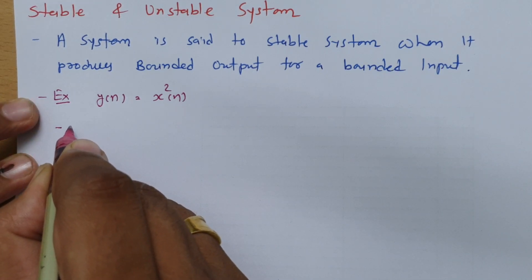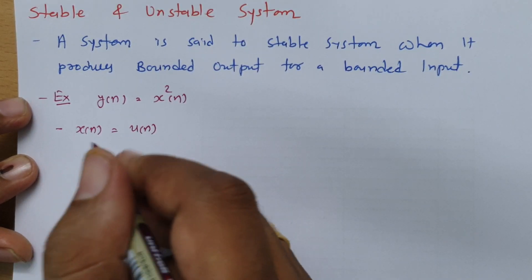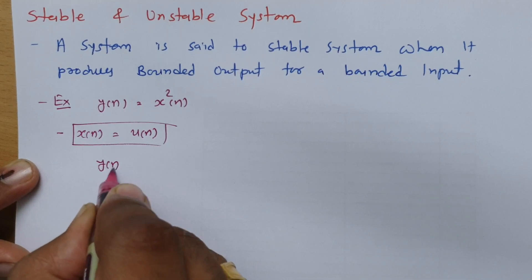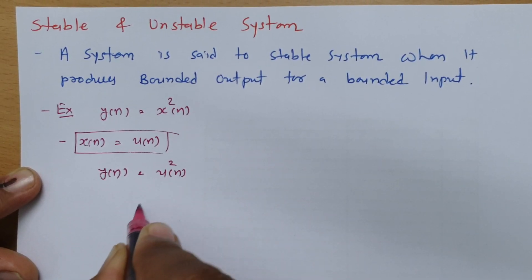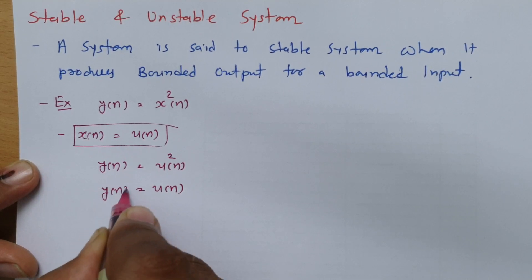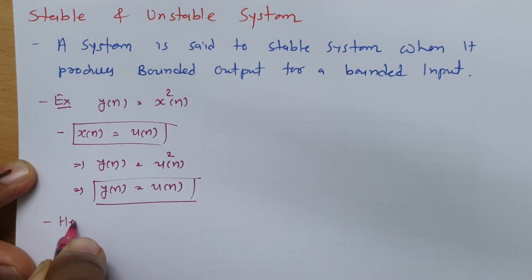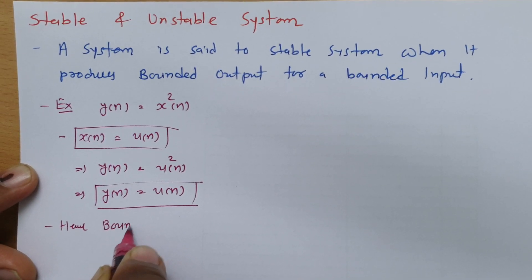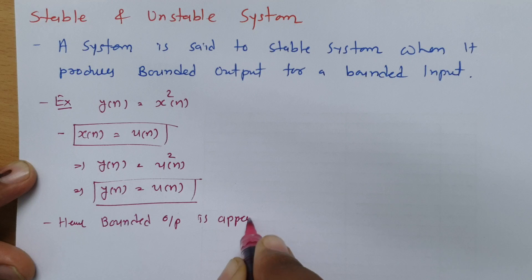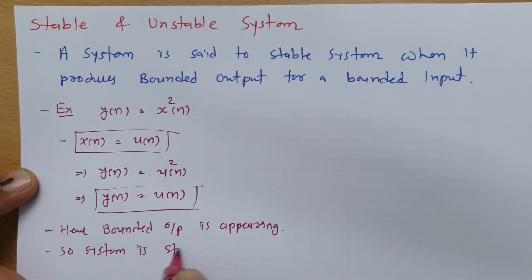I will place step input, so x[n] = u[n]. If you place this in the given system, then the output will be y[n] = u²[n], and the square of a step signal is still a step signal, so it will be u[n]. This is a bounded output, so the system is stable.